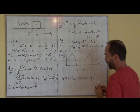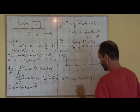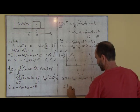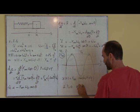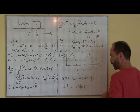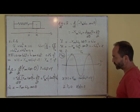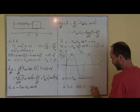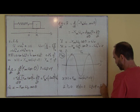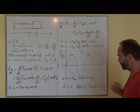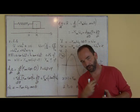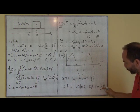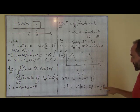Par exemple, si à t = 0 on a x(t) = 0, alors ce cosinus est nul, ce qui signifie que ω₀t + φ = ±π/2, parce que cos(π/2) = 0. Nous verrons plus tard dans des exercices comment lever l'indétermination sur le signe de cette phase à l'origine.